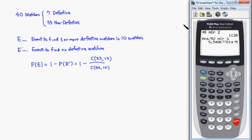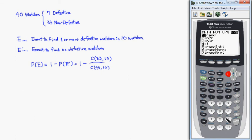So bring out the calculator. Clear this. We have to do 1 minus. Maybe I should put parentheses. So it's going to be 33, and the math probability number 3 gives you a combination, 10. Then divide it by 40, and the math probability, and combination, 10. Put parentheses there. It came out to be 0.890804.